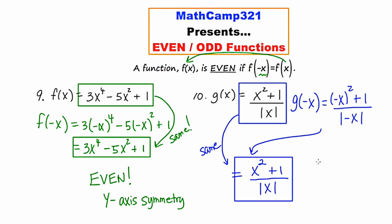Because they're the same, I know that g of x is even, and that my graph — if I were to actually graph it — would exhibit y-axis symmetry. The test for a function to be even is pretty easy: just replace every occurrence of x with negative x and see that what you end up with is the same as what you started with.